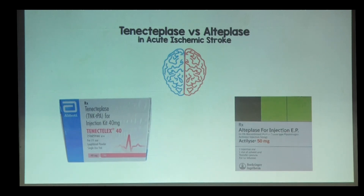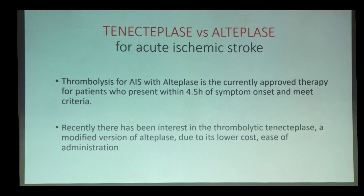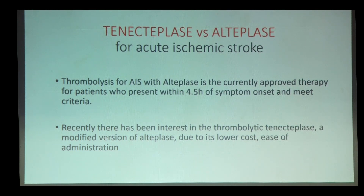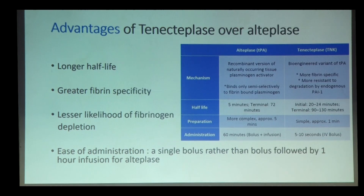The next update is regarding tenecteplase versus alteplase in acute ischemic stroke. Currently, we are using alteplase for thrombolysis in patients with acute ischemic stroke coming within the window period. There has been interest in thrombolysis with tenecteplase, a modified version of alteplase, due to its lower cost and ease of administration. The main advantages of tenecteplase over alteplase are its longer half-life, greater fibrin specificity, lesser likelihood of fibrinogen depletion, and ease of administration — a single bolus rather than a bolus followed by one hour infusion.